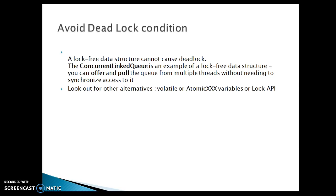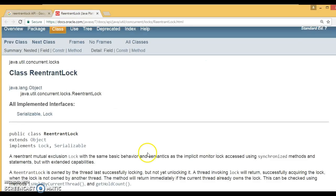The last point: look out for other alternatives. You may use the volatile keyword, or atomic variables like AtomicInteger, AtomicLong, AtomicBoolean, as well as the Lock API. These will help you to avoid the deadlock situation. When we talk about the Lock API, I would like to show you one very famous class: ReentrantLock.